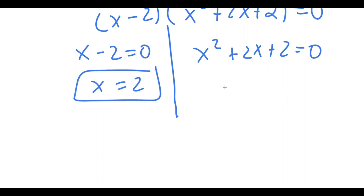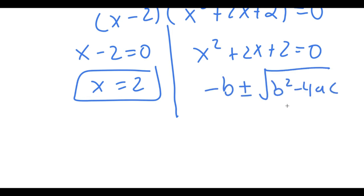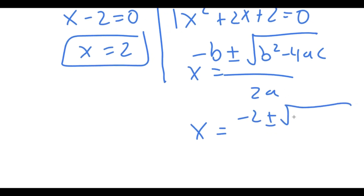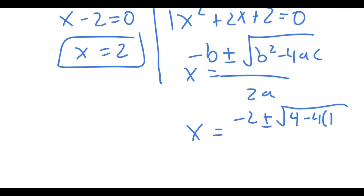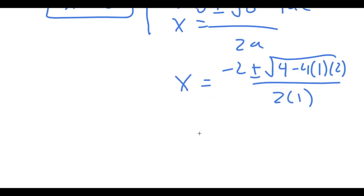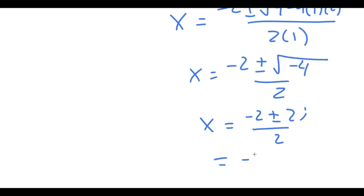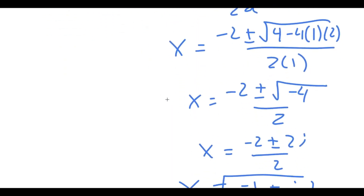And for x squared plus 2x plus 2 equals 0, I can use the quadratic formula. So I get x equals negative 2 plus or minus the square root of 4 minus 4 times 1 times 2, all over 2. This equals negative 2 plus or minus the square root of negative 4 over 2, which is negative 2 plus or minus 2i over 2, which equals negative 1 plus or minus i. So these are my three solutions to this problem.